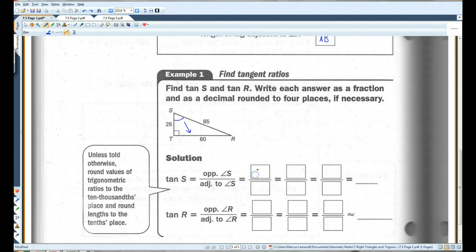Alright. Opposite side is RT. The adjacent side is ST. There we go. RT is 60. ST is 25. If I divide both of these by 5, I get 12 over 5. 12 over 5, that's about, I think it's 2.4.